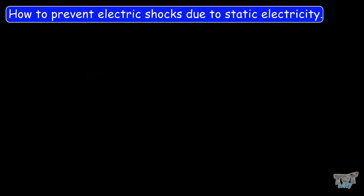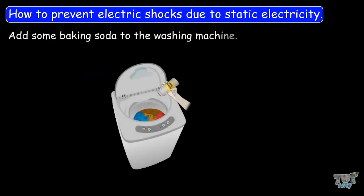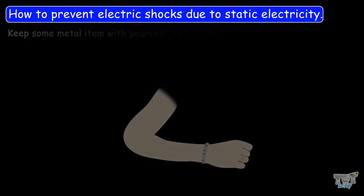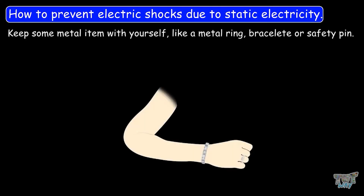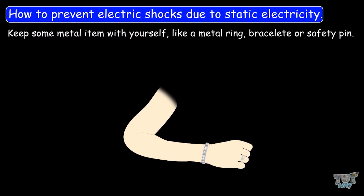Another point: we can add some baking soda to the washing machine, as it creates a barrier between positive and negative charges from building up and creating static electricity. We should also keep some metal item with us, like a metal ring or a safety pin — this is known as grounding yourself. This way you don't accumulate static electrical charges; instead, the charge is transferred to the metal object that you carry.